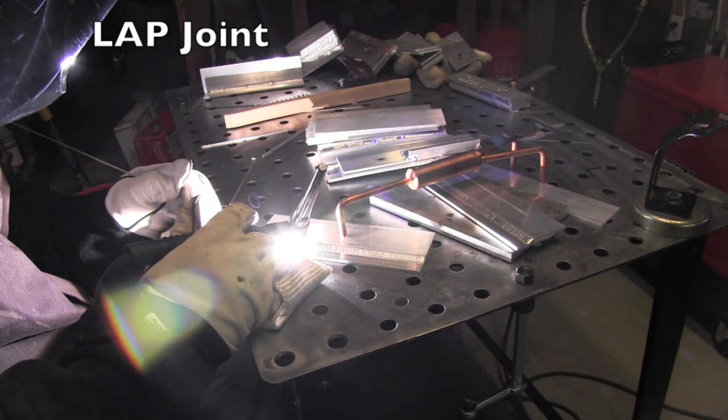Lap joint is up next. Also a very common joint. Imagine putting an overlay patch on a dumpster or a sandblast cabinet. You would oftentimes use a lap joint for that, although it probably wouldn't be out of aluminum. A lap joint is very common for patches and brackets and tabs, mounting brackets.